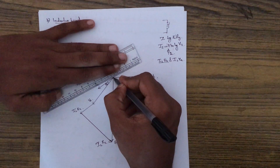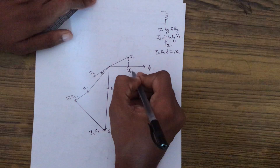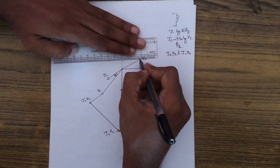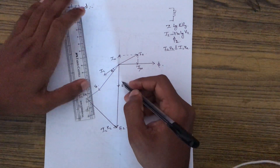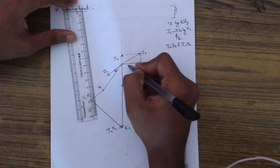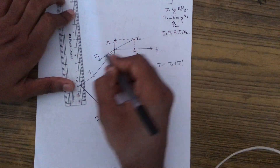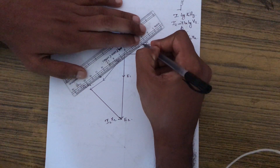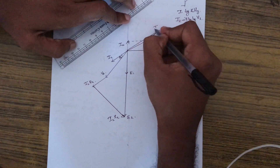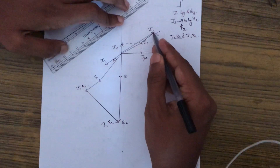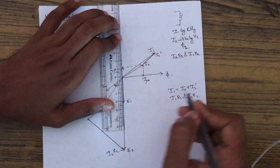For the primary components, first we draw the no load component I0, which can be resolved into I_mu and I_w. On the primary side, I1 equals I0 plus I2 dash. Drawing I2 dash and adding to I0 gives I1. Next we draw I1R1 and I1X1.